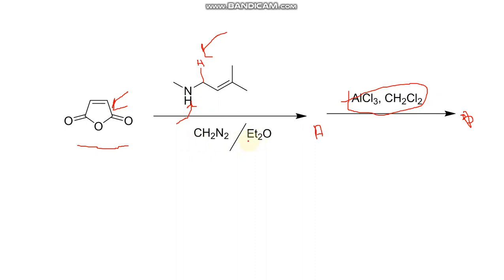Now, the next reagent is Et2O, which is a solvent with no role to play for the reaction. But this is CH2 minus N2 plus. This has an important role. This is diazomethane. We have also used this in previous videos. So diazomethane actually has N2 plus and CH2 minus. Both things you have in this reagent: CH2 minus will act as a good nucleophile and N2 plus will act as a good leaving group.